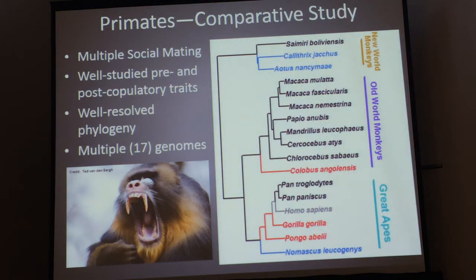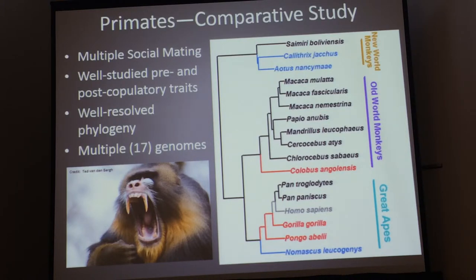In order to study this, I chose primates as my study group because they have multiple social mating systems — two occurrences of monogamous, two of polygynous, and the more common polygyneandrous (multi-male, multi-female). They have well-studied pre- and post-copulatory traits throughout the literature, such as this mandrill, for which there's plenty of literature on body size differences between males and females, tooth size differences — particularly maxillary canine height and width. The phylogeny is pretty well-resolved for the species I've chosen, and there are plenty of sequenced genomes available on NCBI. I was able to find 17 good genomes with more than 85% non-ambiguous base-pair calls.